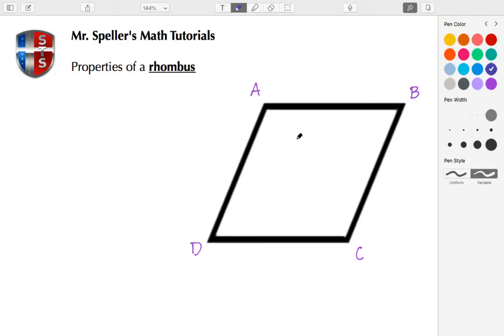We know that with a rhombus, all four sides are congruent, so we're going to place single tally marks on each one of the sides. We also know that opposite sides are parallel, so we're going to place the arrows on these two opposite sides.